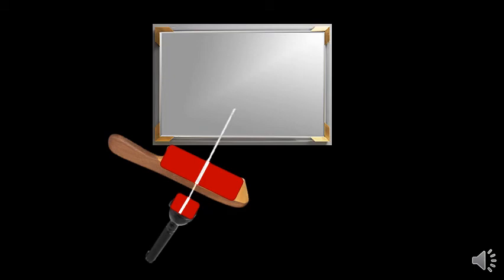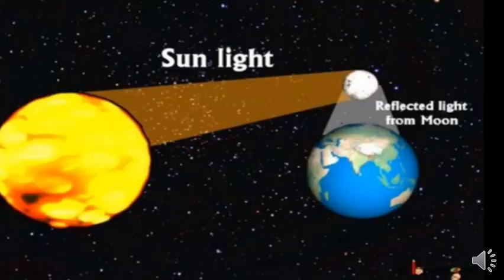Let us perform one more experiment. We will need a mirror, a comb — covering some of its slits — a paper with a small gap, and a torch also covered with a paper with a small slit. As soon as we switch on the torch, one ray goes towards the mirror and gets reflected. We know the light we see from the moon is reflected light — the sun is the major source, that light falls on the moon, gets reflected, and the reflected light reaches the earth.